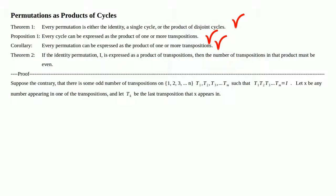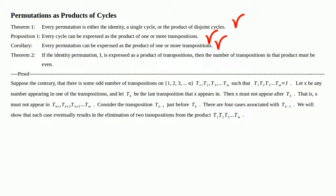Let x be any number appearing in one of the transpositions, and let t_k be the last transposition that x appears in. Then x must not appear after t_k — that is, x must not appear in t_{k+1}, t_{k+2}, …, t_m. So t_k is the last transposition where you'll see x.